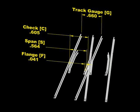I can actually change one of these numbers. I'll start with the check gauge, and I'm going to make this one, let's say, 610 thou. You can see that the flange is still under 50 thou. Span hasn't changed. The check gauge is now 610.